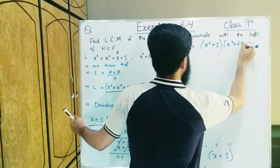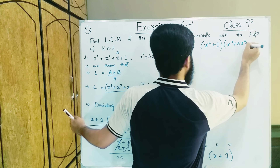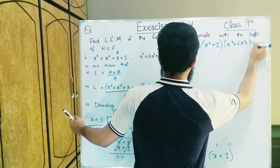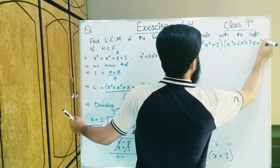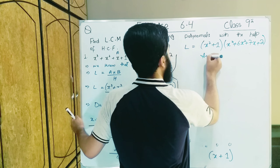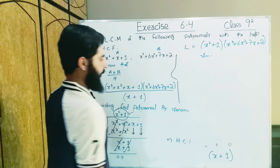Multiplied by 6x² + 7x + 2 — this is your final answer for LCM.